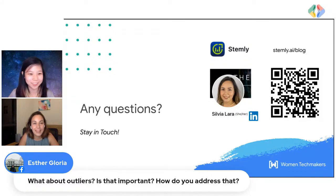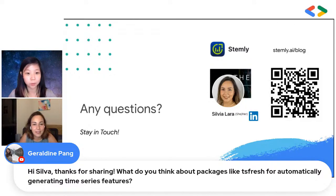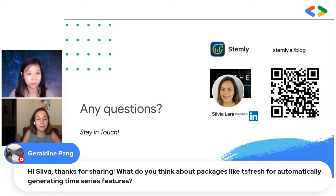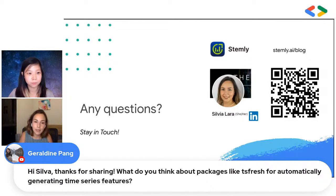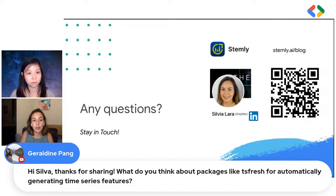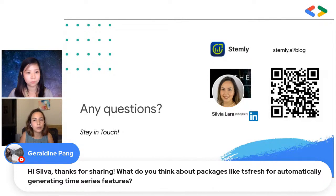A question from Geraldine: what do you think about packages like TSFresh for automatically generating time series features? That's always my starting point — I import as many packages as possible and create a huge feature set so I can then select down and figure out which ones work best for the specific use case. But sometimes those features are really abstract and not relevant to the specific client, which might have a six-month lead period. So you might want to focus on those specific types of features and always add additional ones, like external data features from sell-out or price data the customer has. Those actually end up being much more important than the out-of-the-box features.